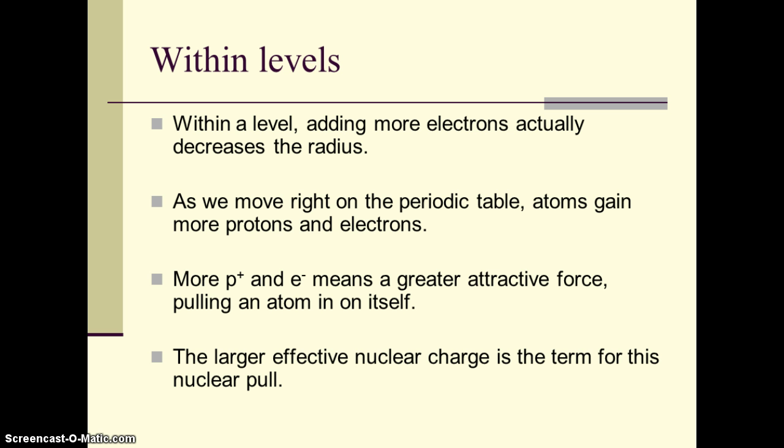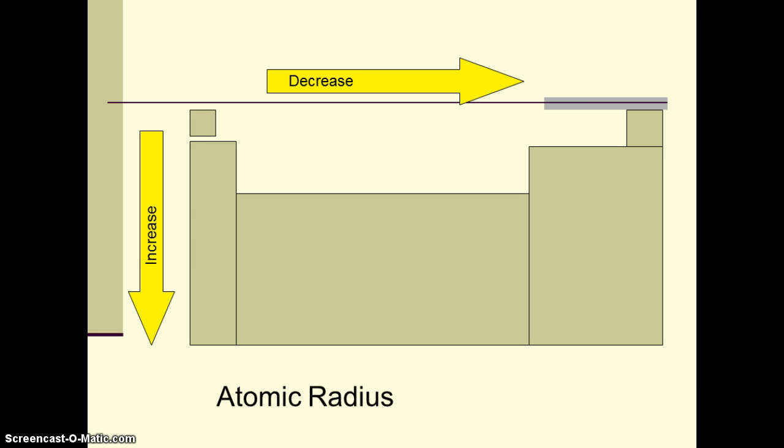So the end result is that we get what's called a larger effective nuclear charge when we have more protons. More protons means more pull on the electrons. And the pattern that creates on our periodic table is that as we move from left to right, the radius decreases. As we move from top to bottom, the radius increases. So the atoms that are the largest are down in the lower left of the periodic table. Those are atoms like cesium and francium. The ones towards the top right that have a relatively large number of protons and electrons within their levels are fluorine and chlorine. Those guys tend to be fairly small.